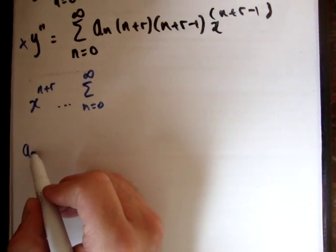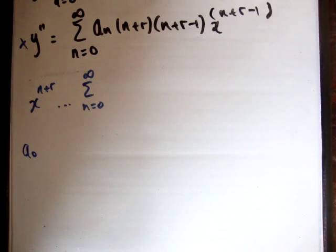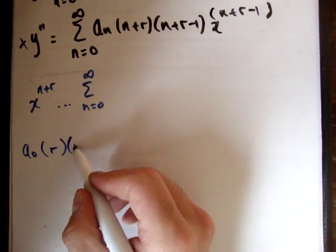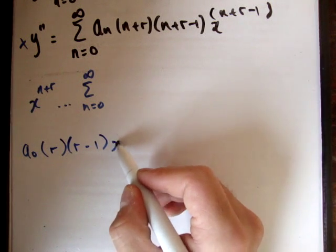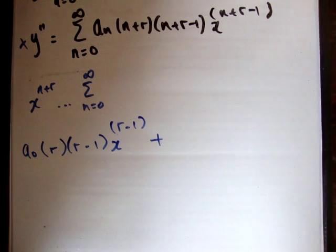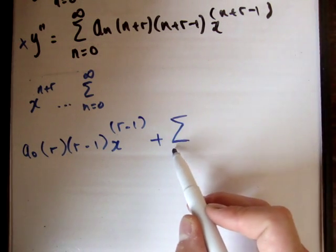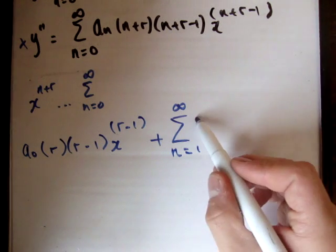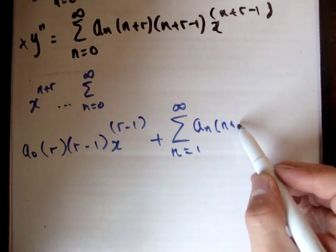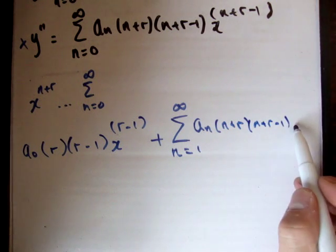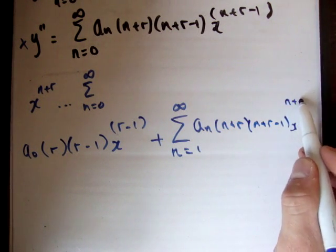We'll get the following. We'll get a naught times r times r minus 1 times x to the r minus 1. And with that we'll have the power series n is equal to 1 to infinity of a n, n plus r, n plus r minus 1, x to the n plus r minus 1.